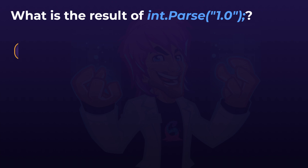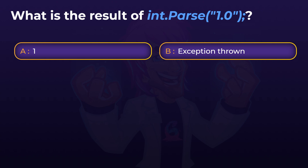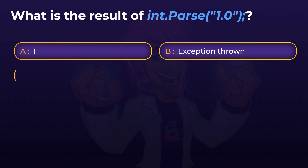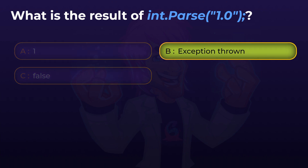What is the result of int.Parse with the string "1.0"? Is it 1? Is an exception thrown? Or is it false? The answer is: an exception is thrown.